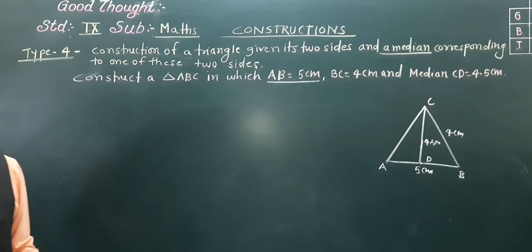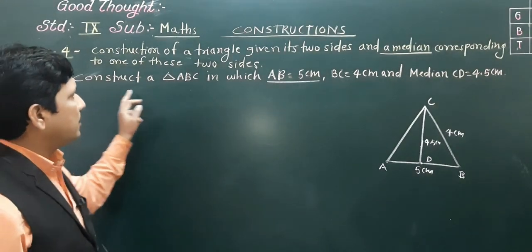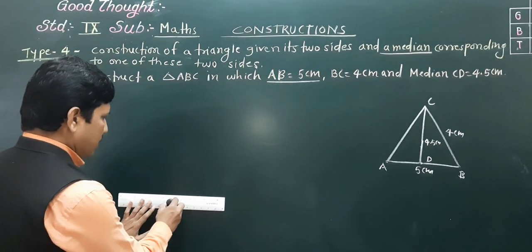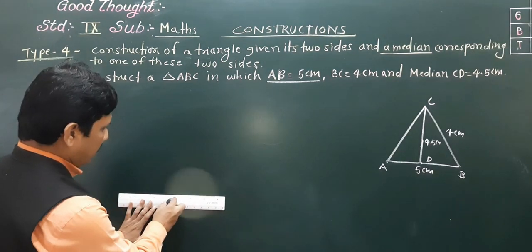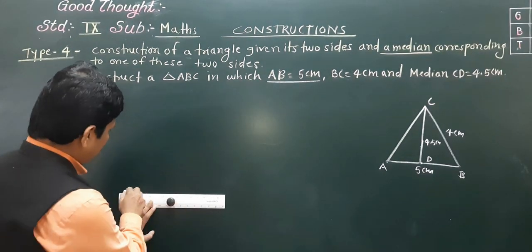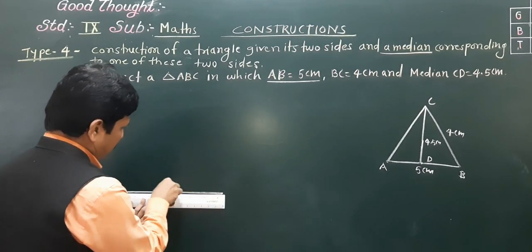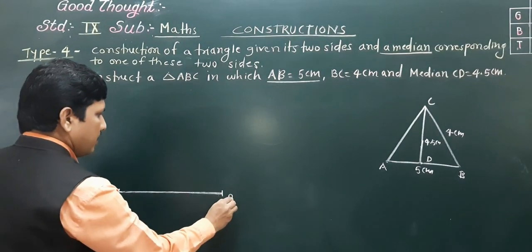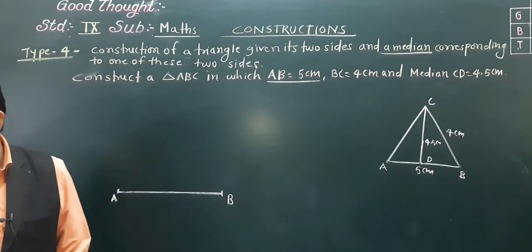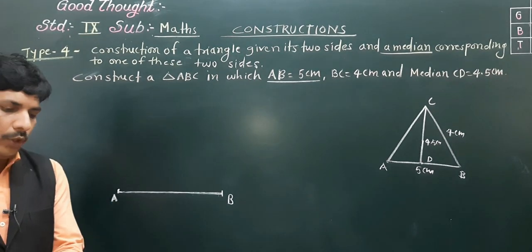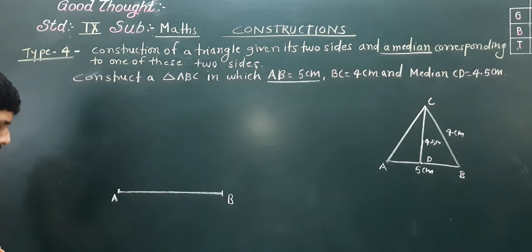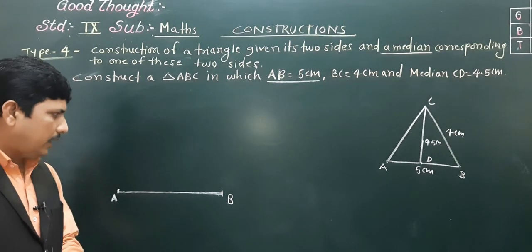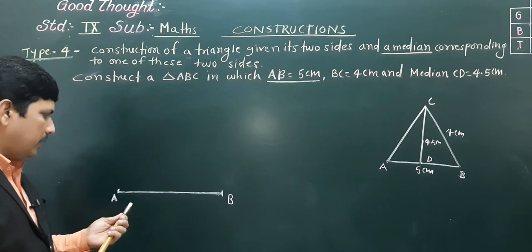Starting the construction: AB is equal to 5 centimeter. I am taking AB equal to 5 centimeter — you must take exactly 5 centimeter. This point is A, this point is B, AB is equal to 5 centimeter. After that, we need to find the midpoint of AB. To find the midpoint, take more than half the distance and bisect — you will automatically get the midpoint.